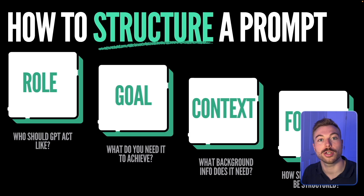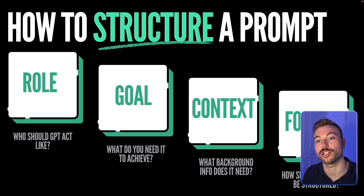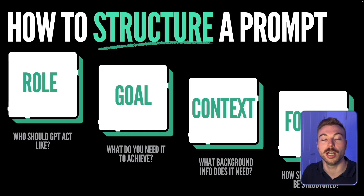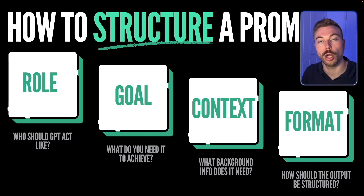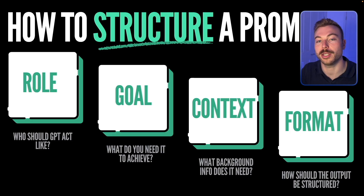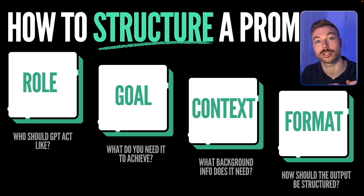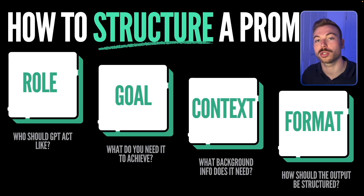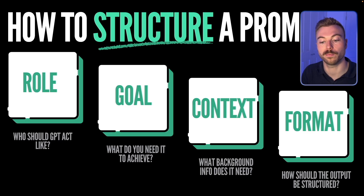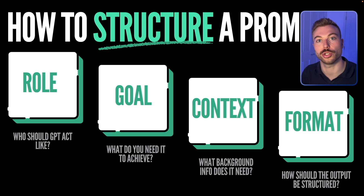First things first — how do we structure a prompt? There's a lot of art that goes into prompt engineering, but here is a quick four-step formula that gets you really good outputs. We want to start with the role: what should ChatGPT, Gemini, or Claude look like and how should it act? Is it a marketing analyst, a data analyst, a customer support specialist? What's the role it needs to assume?